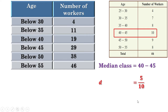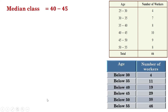5 divided by 10 can be written as 1 by 2. Now let us observe which is the first term in the median class. Below 40 there are 19 workers, so the 20th term is the first term in the median class. Let us find the 20th term first. The median class is 40 to 45 and the common difference is half. The 20th term is 40 plus d by 2.